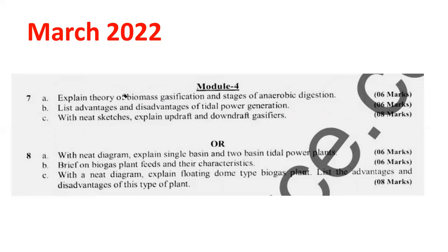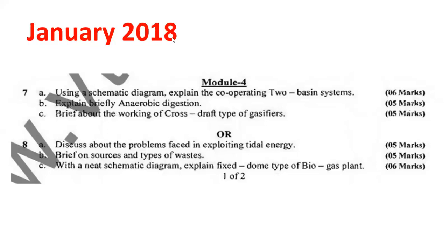Let's see another question from January 2018. In the case of biomass, you have to explain a brief on sources and types of waste. That is one question from biomass, carrying a weightage of 5 marks.